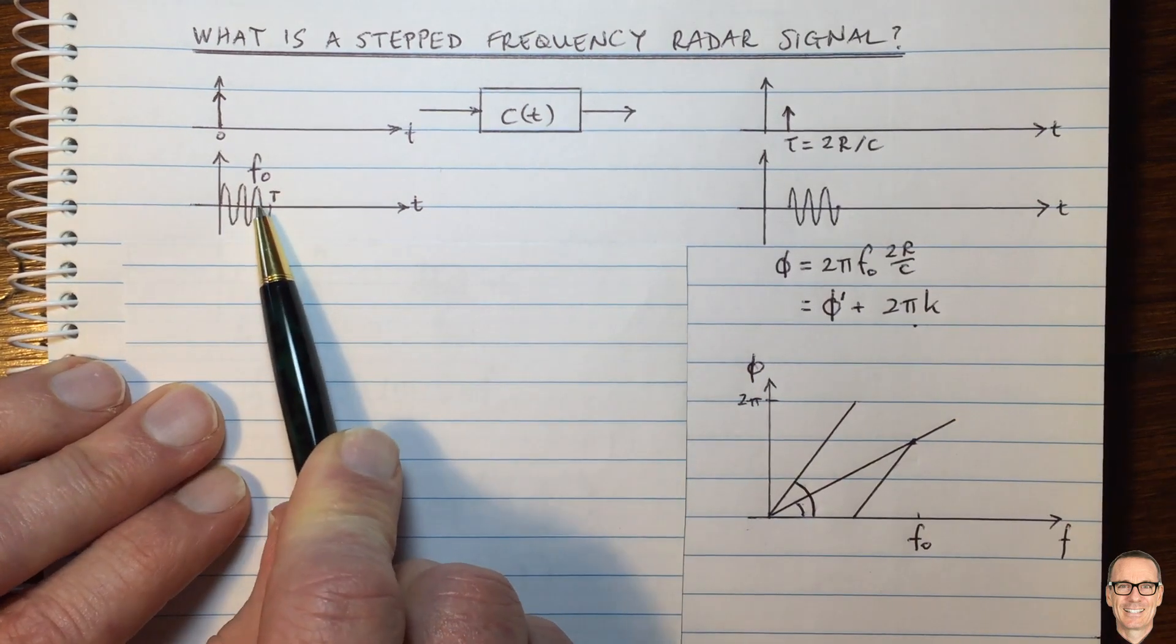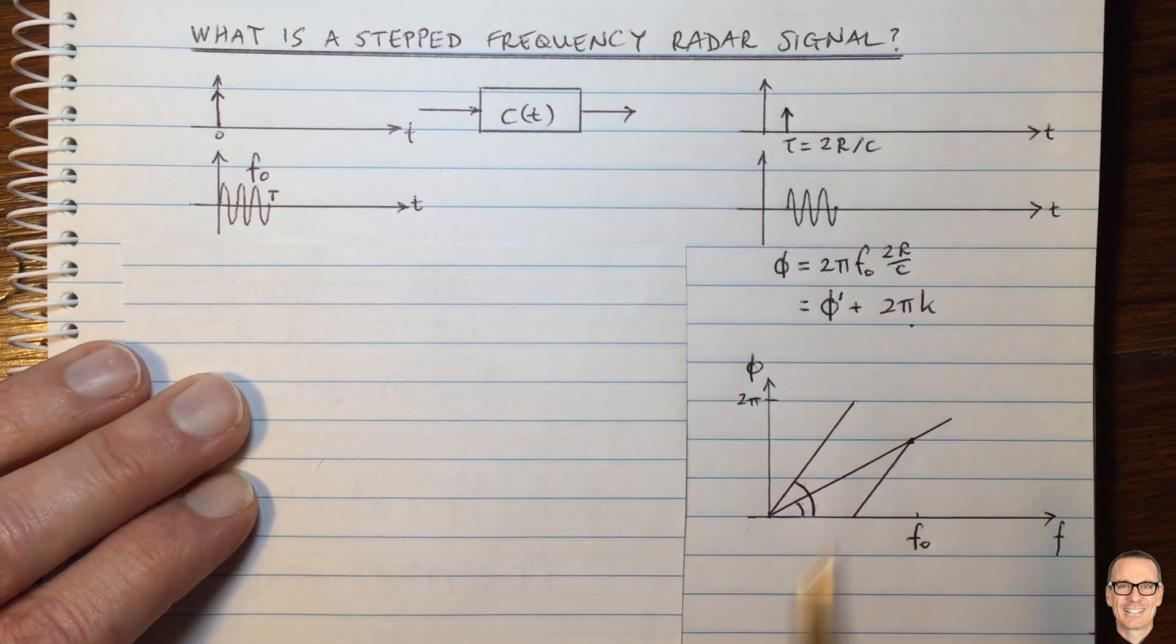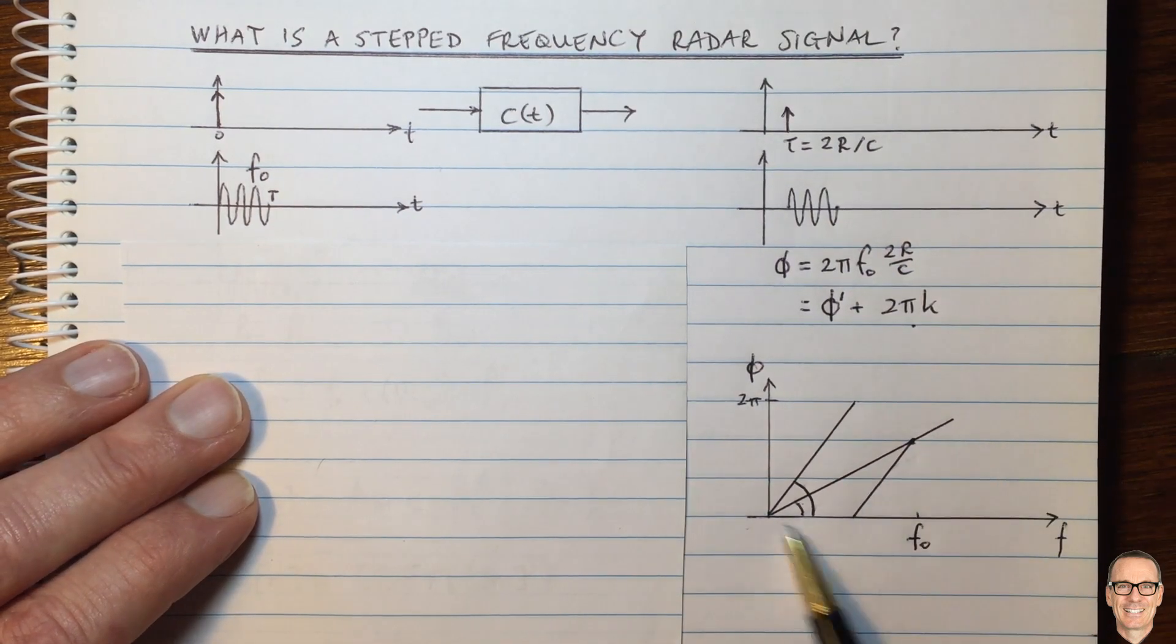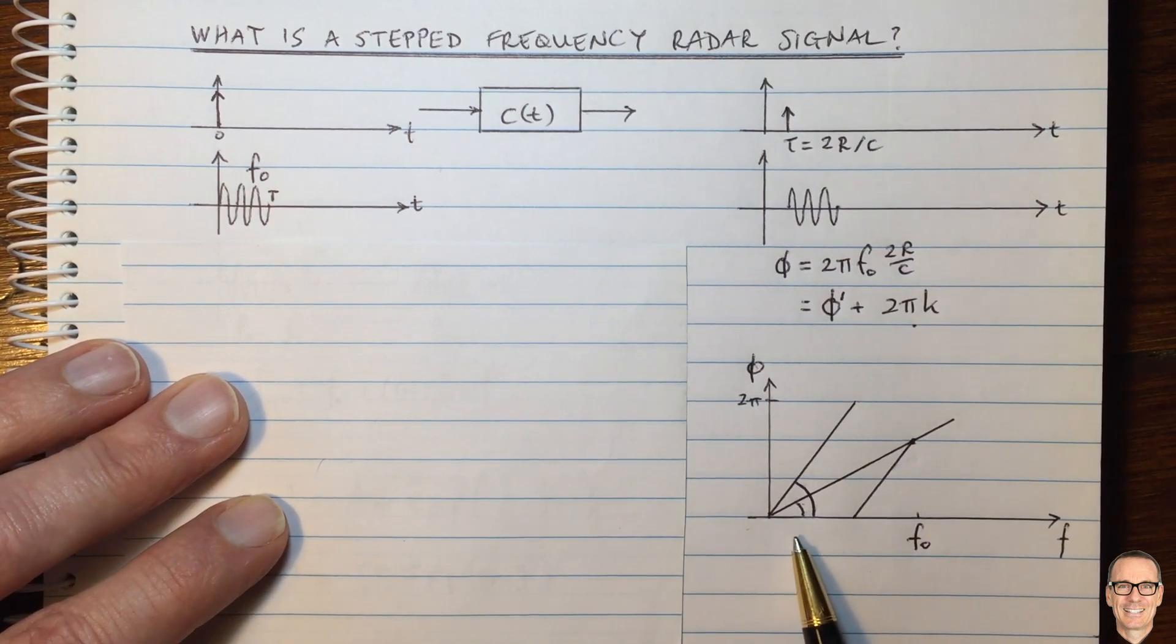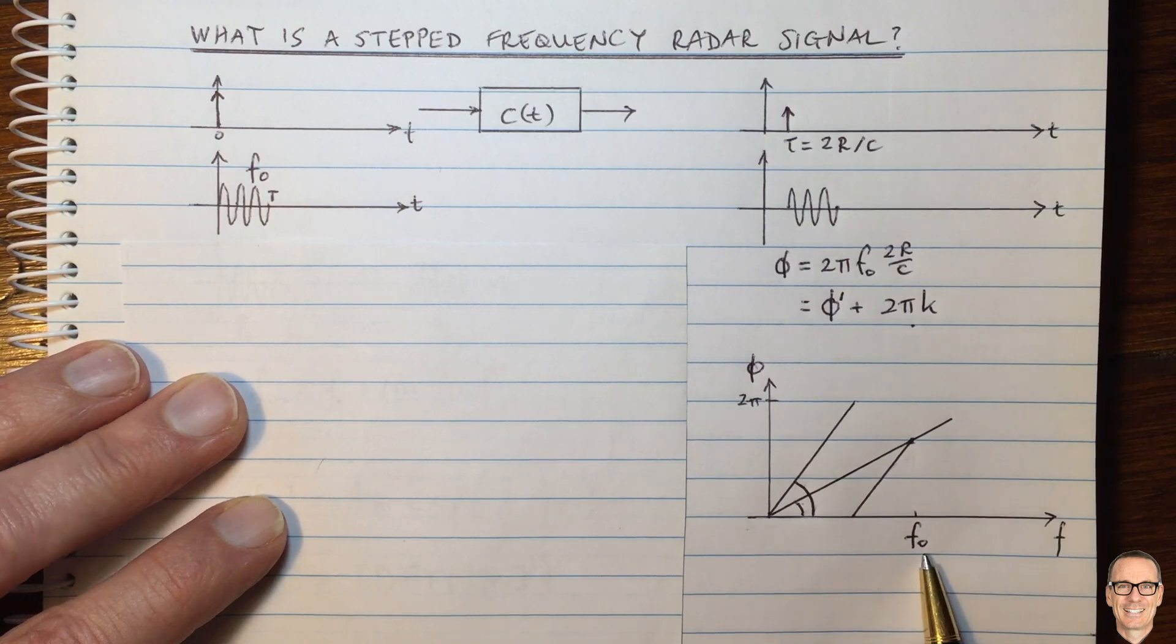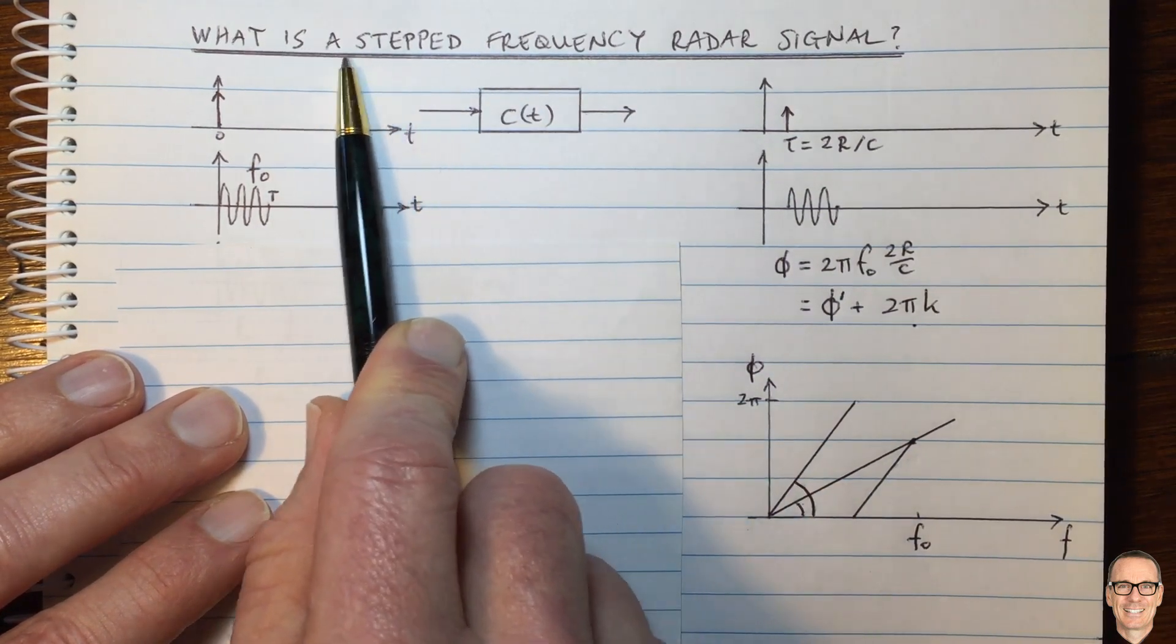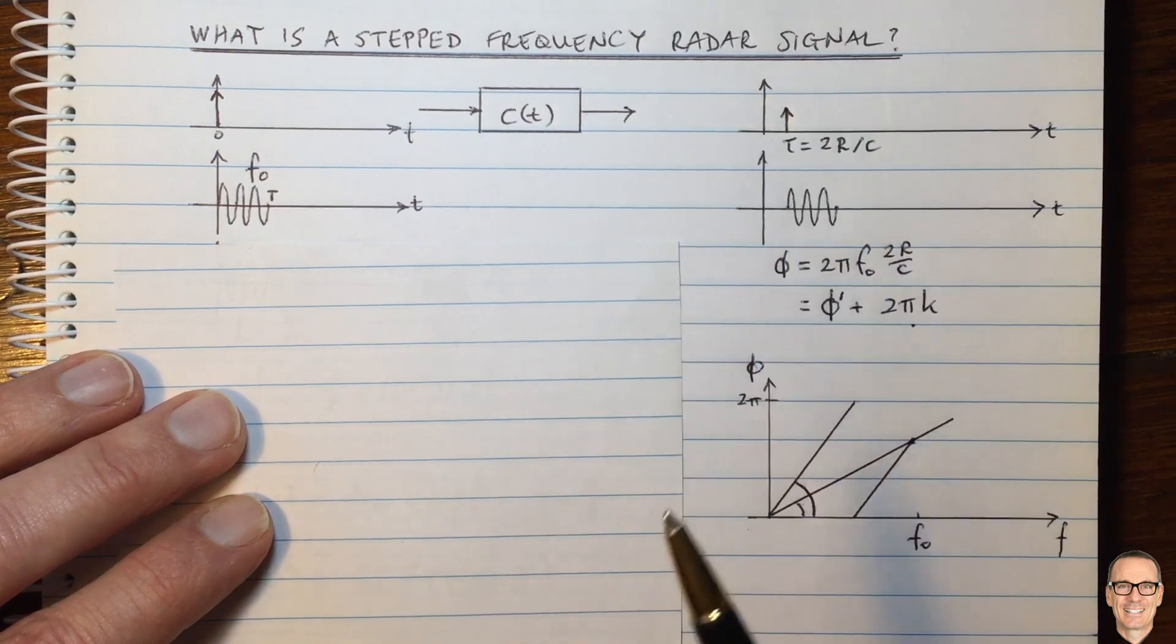So we really can't be having that as a practical waveform for radar. So just by measuring one frequency, we're not able to resolve the actual range. So naturally enough, your first thing that would come to you is to think not just have one frequency. Let's think about multiple frequencies. And this is exactly the stepped frequency radar system.